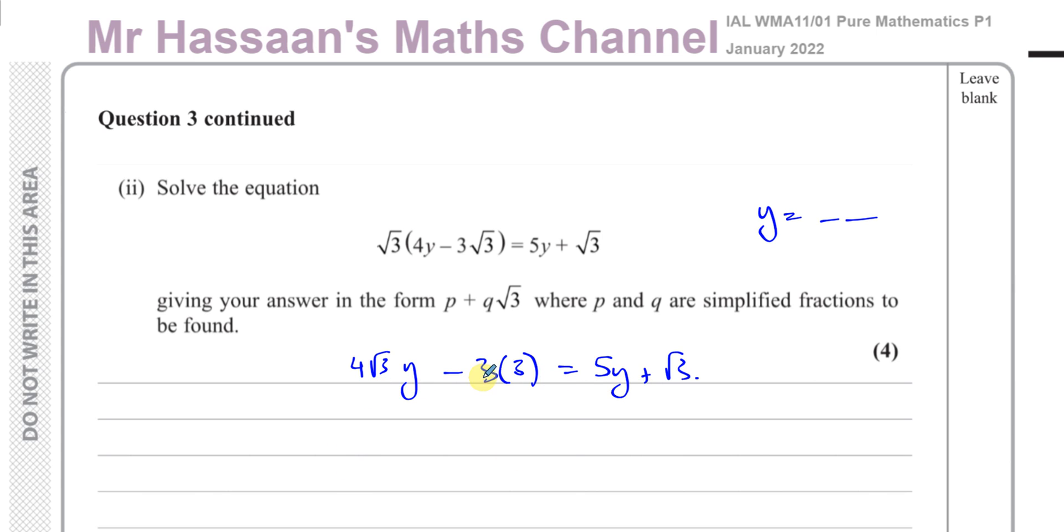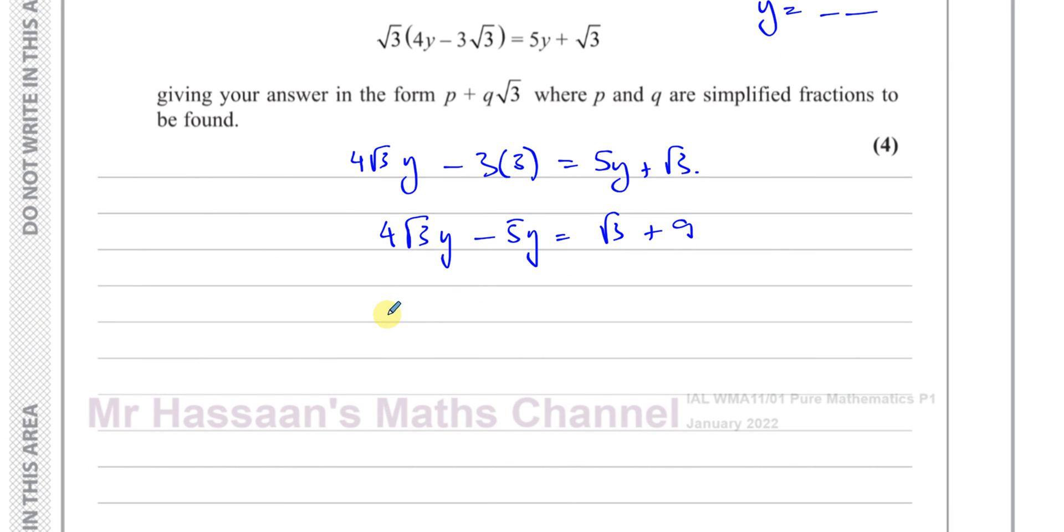Now I've got the y terms able to move around. So I can subtract 5y from both sides. So I have 4√3y - 5y equals √3 + 9. I can take y as common from these two terms, leaving me with y(4√3 - 5) = √3 + 9. And now I can divide both sides by 4√3 - 5. So y is equal to (√3 + 9) over (4√3 - 5). Now that's my answer.